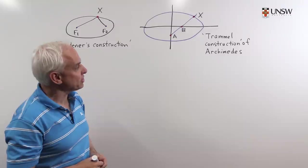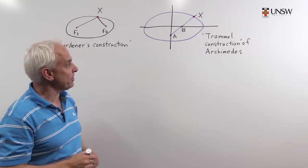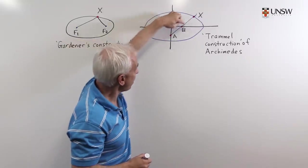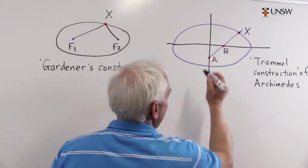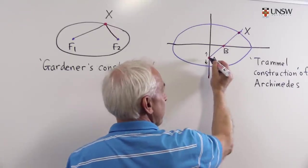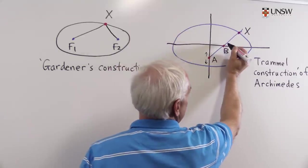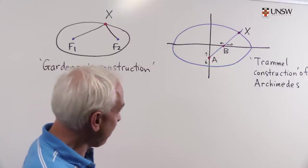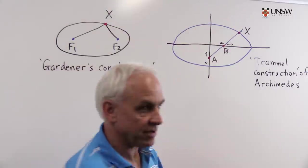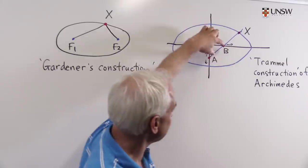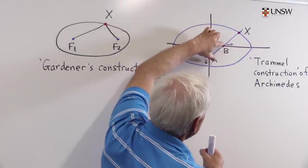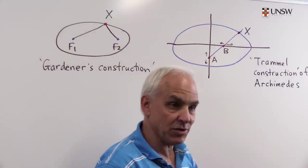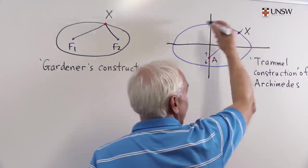Another physical kind of construction is due to Archimedes, sometimes called a trammel construction, where you have two fixed axes and you have a rod which is hinged so that it's allowed here to move this point A on the vertical axis, and the point B is allowed to move freely on the horizontal axis. But otherwise the rod has this fixed position. This distance can't change. So as A and B move maintaining their separation like this, this fixed point x which is also on this rod will traverse an ellipse.